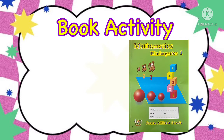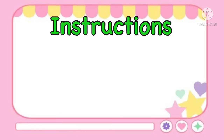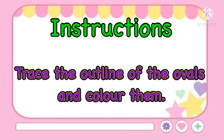please get your mathematics book in kindergarten one and open to page 37. Open to page 37. Instructions: repeat after me — trace the outline of the ovals and color them.